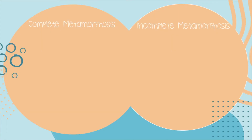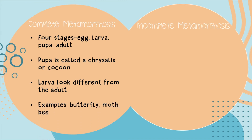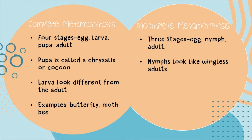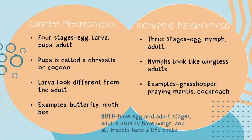Complete metamorphosis vs. incomplete metamorphosis — let's look at how they're different and what they have in common. Complete metamorphosis has four stages: egg, larva, pupa, adult. The pupa is called a chrysalis or cocoon. The larva looks different from the adult. Examples of insects that undergo complete metamorphosis are butterflies, moths, and bees. Incomplete metamorphosis has three stages: egg, nymph, adult. Nymphs look like wingless adults. Examples of insects that go through incomplete metamorphosis are grasshoppers, praying mantis, and cockroaches. Both have egg and adult stages, and the adults usually have wings. All insects have a life cycle.